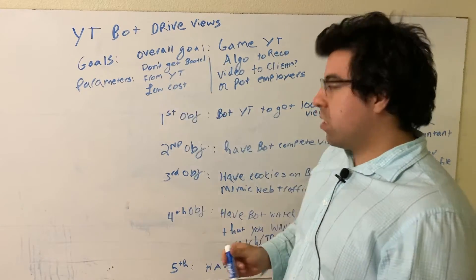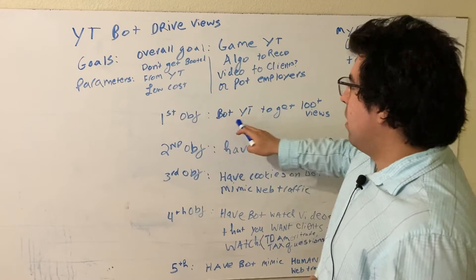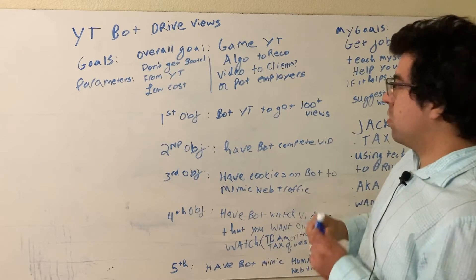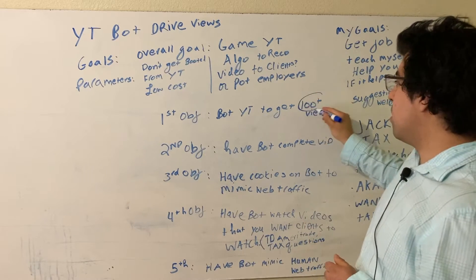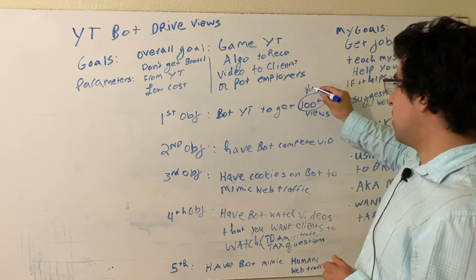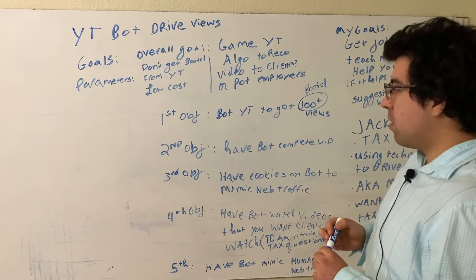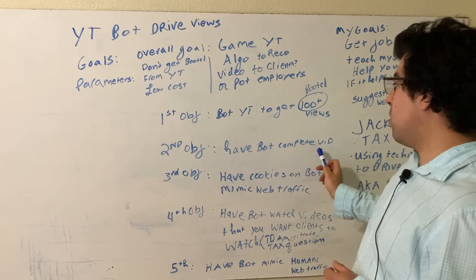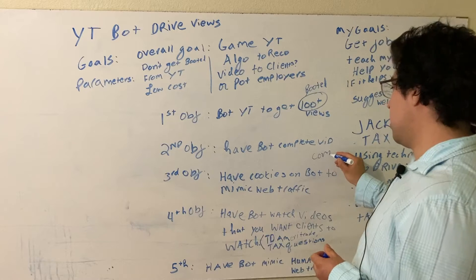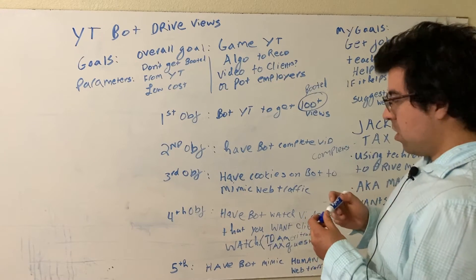Our first objective is to get the YouTube video to a hundred plus views. A hundred is good, it's feasible, and we won't get booted. Our second objective is to build this bot to complete the video, because I know the YouTube algorithm rewards video completion.